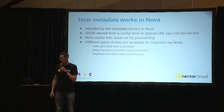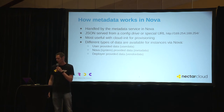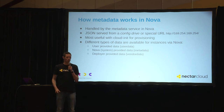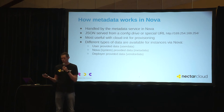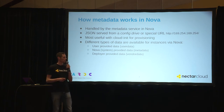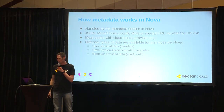The second type is the general metadata provided by Nova, which provides system-level data — the instance ID, the hostname of the instance, SSH keys, and other things as well. These are things that the instance might need to know to do its proper provisioning.